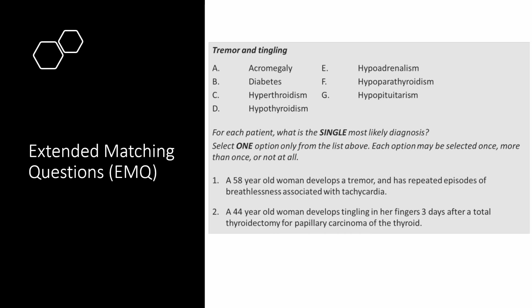Now these questions are highly reliant on pattern recognition. There's a mix between one and two step answers, and this sample question is a perfect example of it. So the first question: a 58 year old woman develops tremor and has repeated episodes of breathlessness associated with tachycardia. If you look here — 58 year old woman, tremor and tachycardia — the first thing in your mind should be hyperthyroidism. That's where pattern recognition comes in.